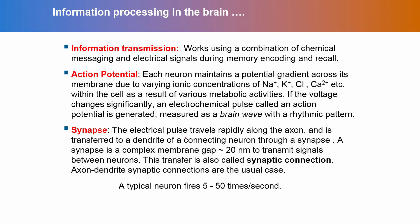How do we do information processing in the brain? There are many stages. The first step is information transmission, which works using a combination of chemical messaging and electrical signals during memory encoding and recall. This is the heart of it — whenever we have to store patterns or recall patterns, there is some encoding happening, and because of that there is information transmission.